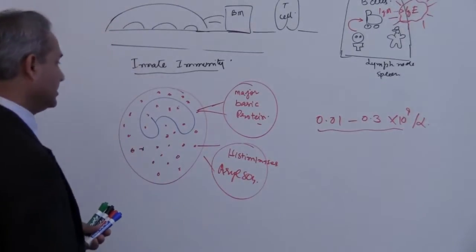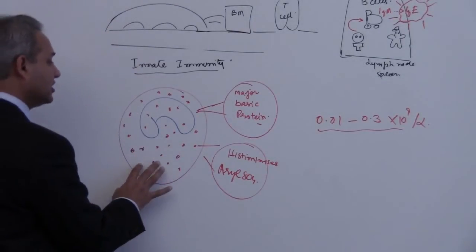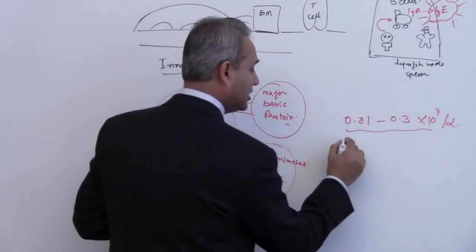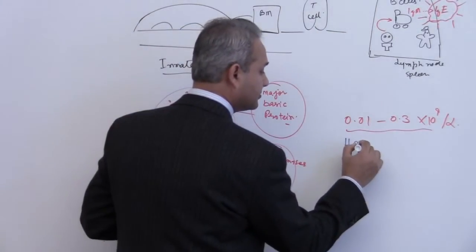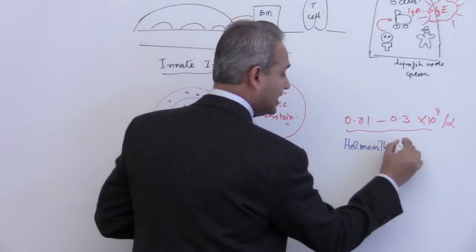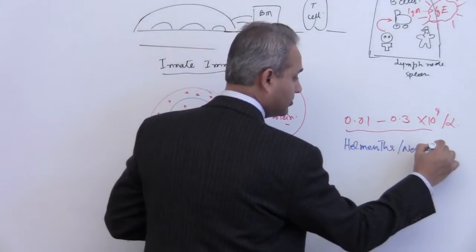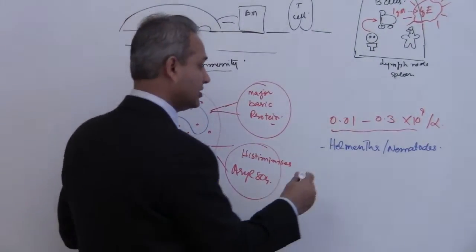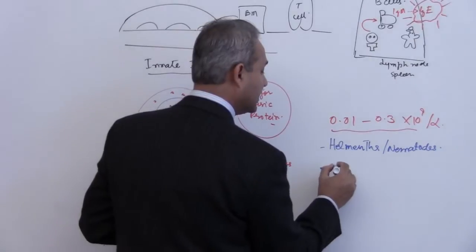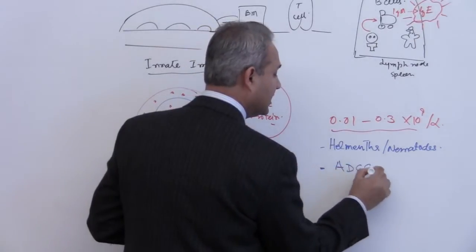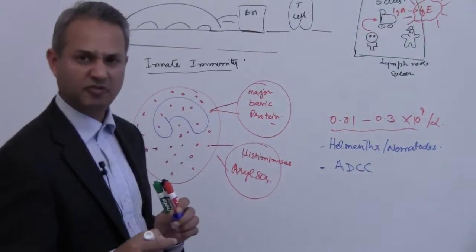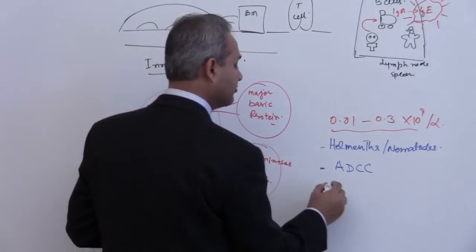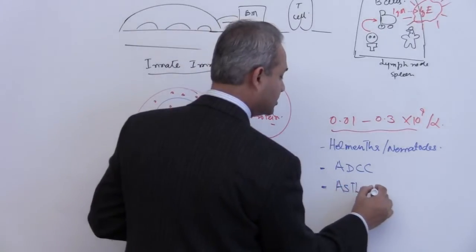So we will see what that means and how does that work. So the first thing is what we should cover about these. We should cover how the helminths or nematodes are taken care of by the eosinophils. We should also know what is ADCC, antibody dependent cellular cytotoxicity, a very important concept. And then we should see what is the effect of the eosinophils in asthma, asthmatic patients.